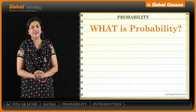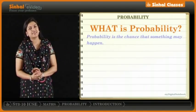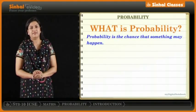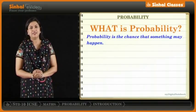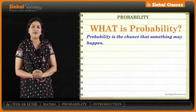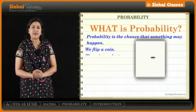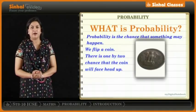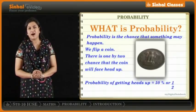What is probability? We really have a good idea of what probability is, right? It's simply the chance that something may happen. There is a really easy way to explain probability — practically everyone uses it. All you have to do is flip a coin. There is a 1 in 2 chance of the coin facing head up, so the probability of getting a head up on the coin is 50% or half.